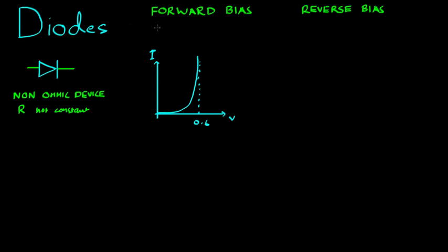So a diode in forward bias is very picky about its voltage.